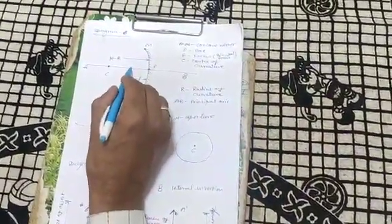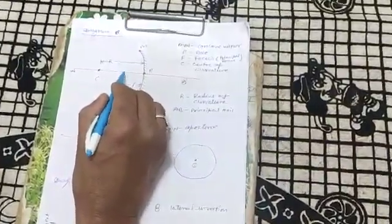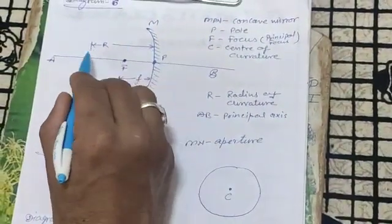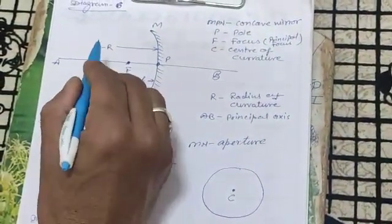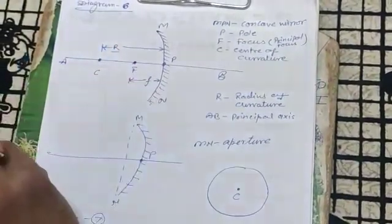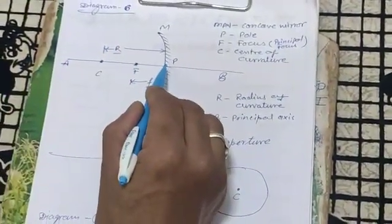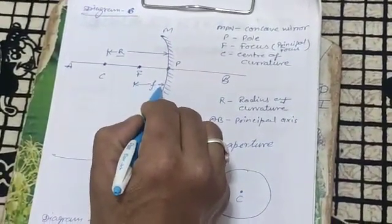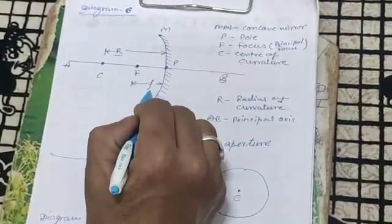F focus will be the center point or the midpoint of pole and center of curvature. Distance from pole to center of curvature is called radius of curvature, denoted by R. Distance from pole to focus is known as focal length, denoted by small f.